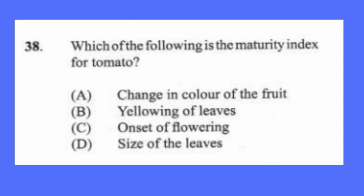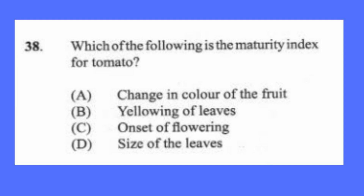Question 38: Which of the following is the maturity index for tomato? (a) change in color of the fruit, (b) yellowing of leaves, (c) onset of flowering, (d) size of the leaves. The answer is A, change in color of the fruit. Maturity indexes are the signs you look for when fruits are ready to be harvested — certain signs they show when ready, and that is called a maturity index.